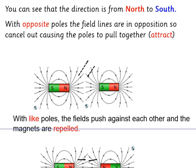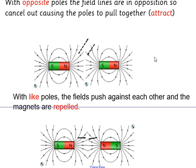With opposite poles, the field lines are in opposition to each other. In that way, some cancel out, causing the poles to be pulled together or attracted. With like poles, the fields push against each other and the magnets are repelled.